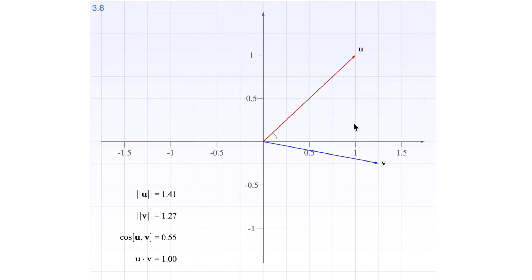So here we have two vectors u and v. As you know, the dot product of u and v is equal to the length of u times the length of v times the cosine of the smallest angle between these two.